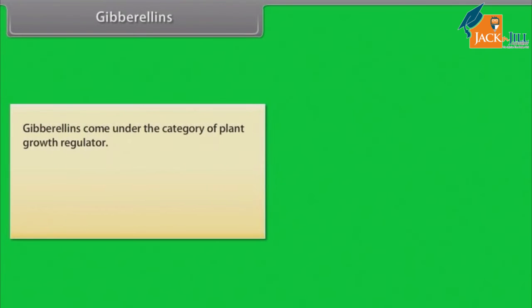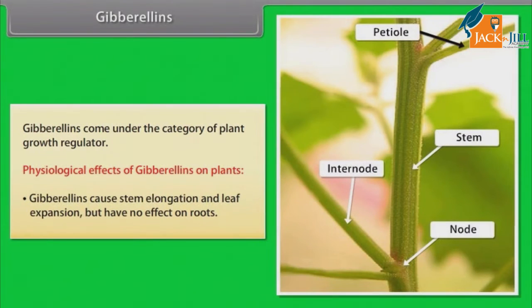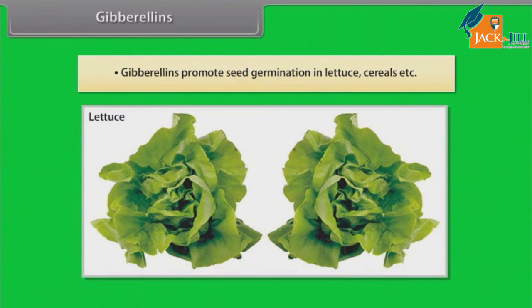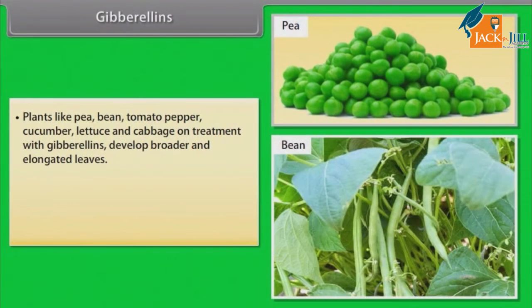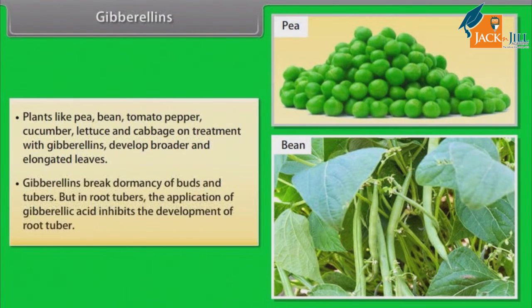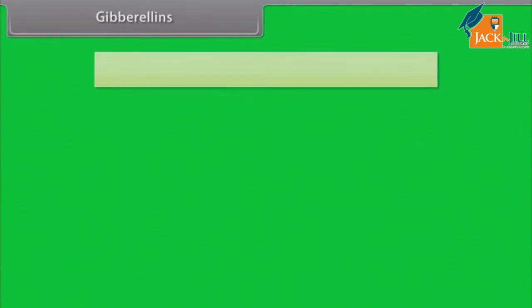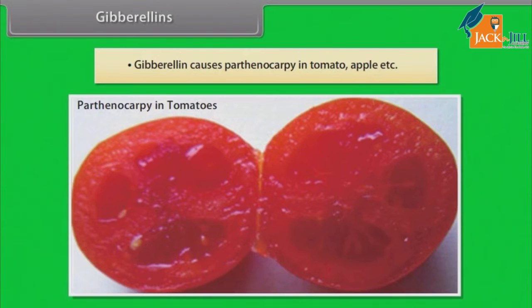Gibberellins: Gibberellins come under the category of plant growth regulators. Gibberellins cause stem elongation and leaf expansion but have no effect on roots. Gibberellins promote seed germination in lettuce, cereals, etc. Plants like pea, bean, tomato, pepper, cucumber, lettuce, and cabbage, on treatment with gibberellins, develop broader and elongated leaves. Gibberellins break dormancy of buds in tubers, but in root tubers the application of gibberellic acid inhibits the development of the root tuber. Gibberellins cause parthenocarpy in tomato, apple, etc.